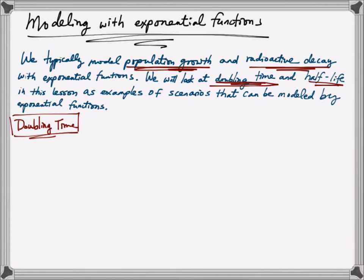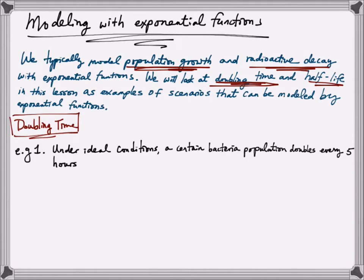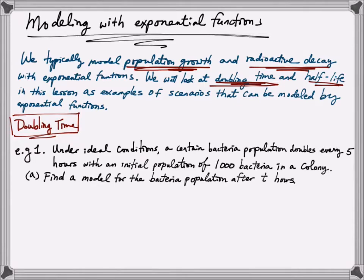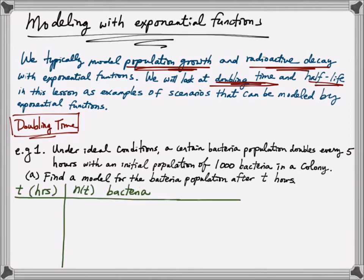Let's start with the doubling time example. Under ideal conditions, a certain bacteria population doubles every 5 hours with an initial population of 1,000 bacteria in a colony. Let's first find a model for the bacteria population after T hours by investigating what happens to the colony population as T increases. When T is equal to 0 — the beginning of the time — the initial population is 1,000. We denote N of T as the population after T hours.